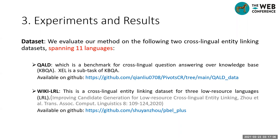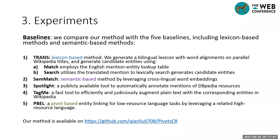We conduct experiments on two datasets spanning 11 languages. The first one is QALD, a benchmark for cross-lingual question answering, where the first step is to link the mention in the question to the correct entity. We collected and cleaned this dataset for our task and released it on GitHub. Another dataset is a candidate retrieval dataset for low-resource languages, also available on GitHub. We compare our method with five baselines, including lexicon-based, semantic-based, and keyword-based methods. The code of our method is also released on GitHub.